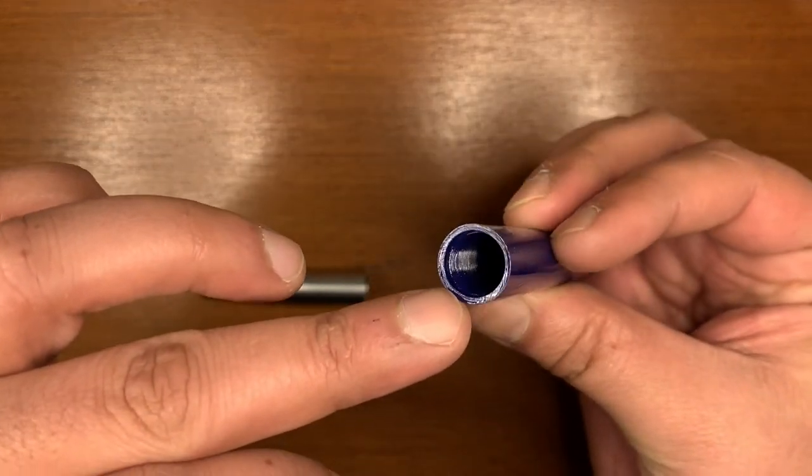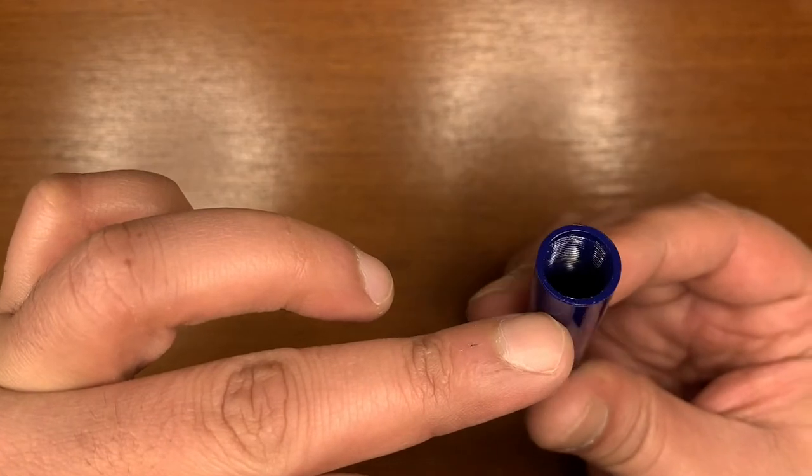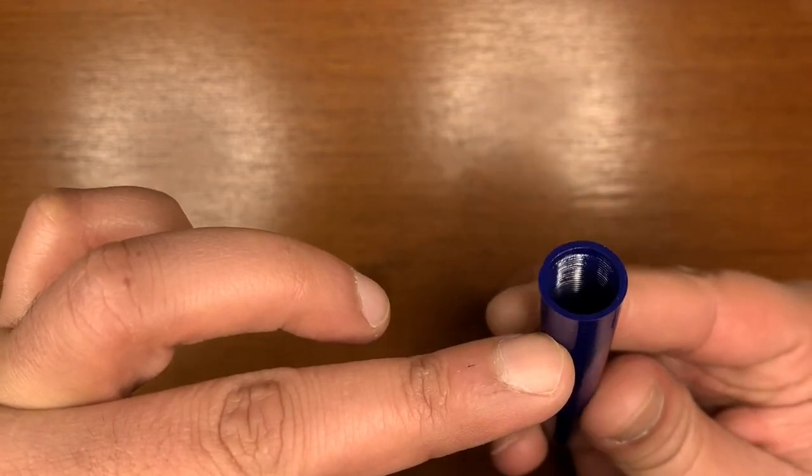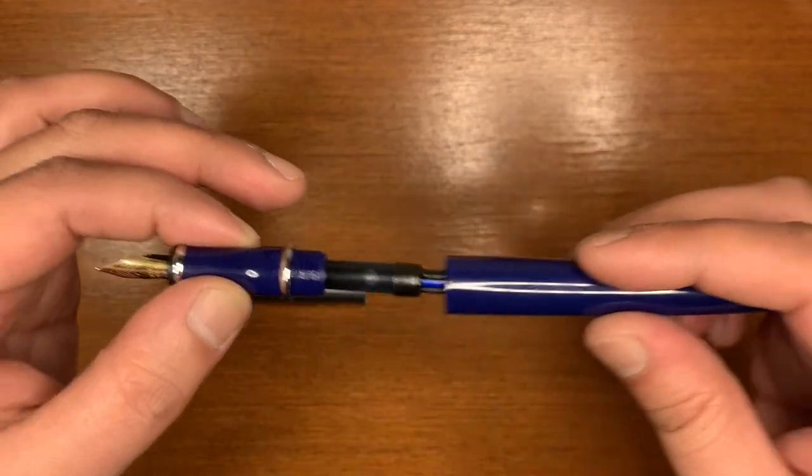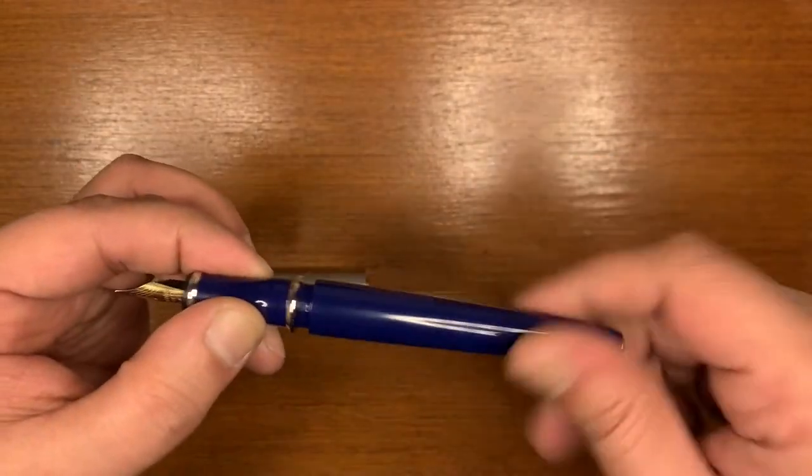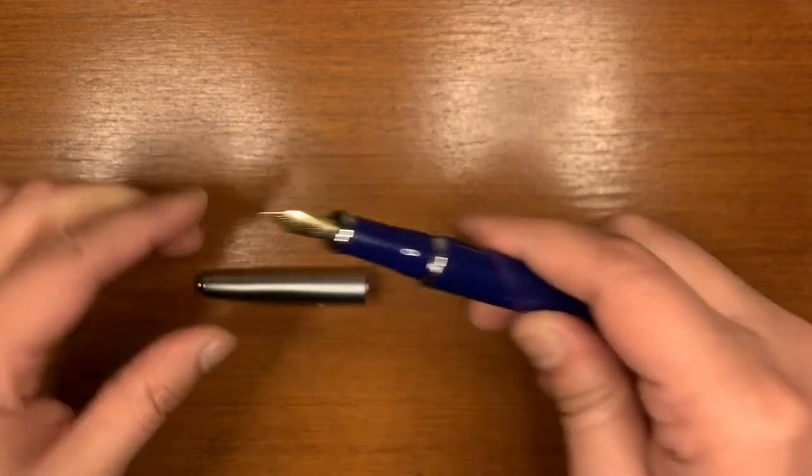The threads are fairly deep and again you can see some oils. That's why it's shiny and they're all plastic. So it's plastic on plastic so it seems all right. What else do we have about this pen now?